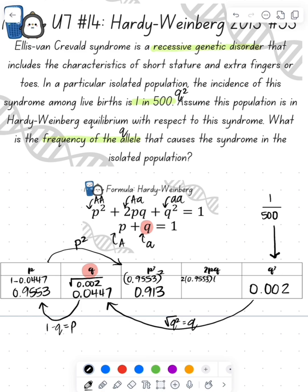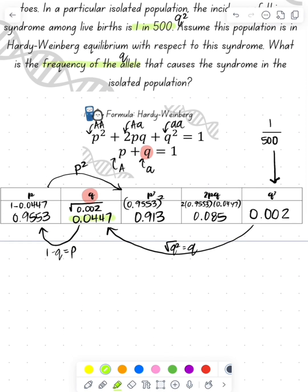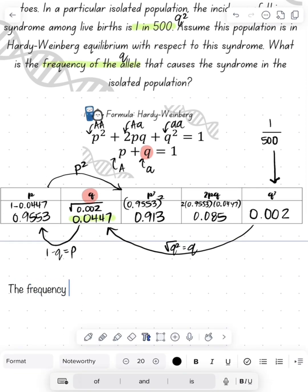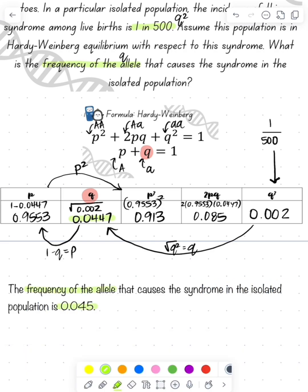To find 2pq, it's going to be 2 times p times q, which gives me 0.085. We're looking for the q value, so we highlight that. So the incidence or the frequency of the q allele, or the recessive allele, is going to be 0.045.